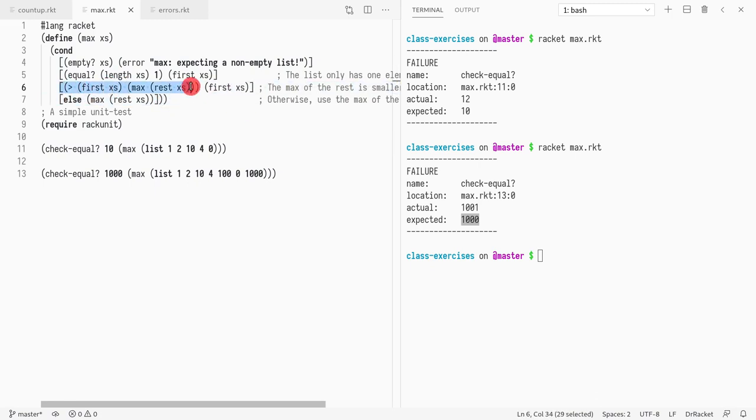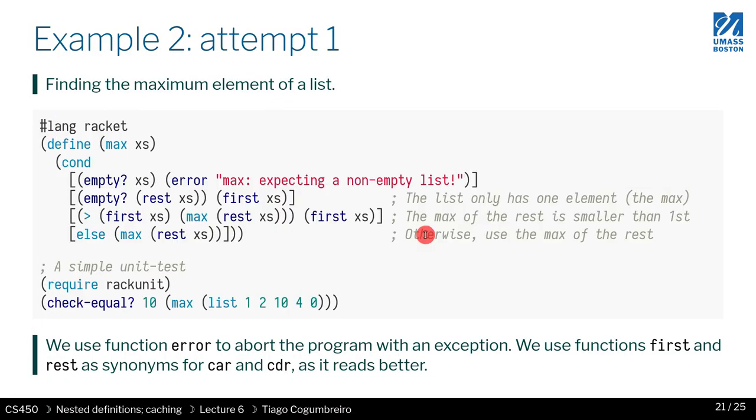And if it's greater than, you're in the first case, otherwise in the second case, where the maximum element was already calculated in the rest of the list. Okay, so we have this, this is our implementation, the one we're seeing.